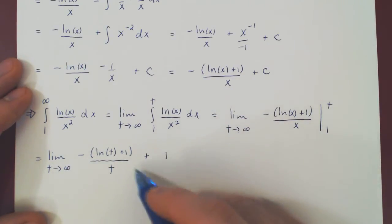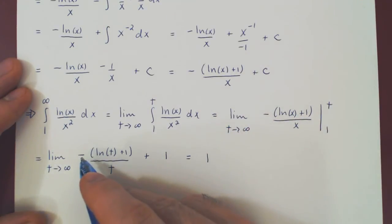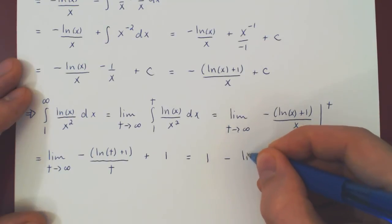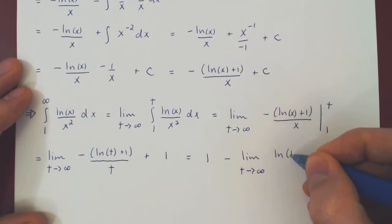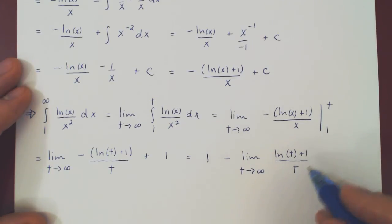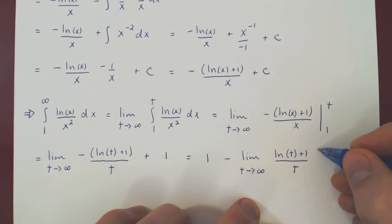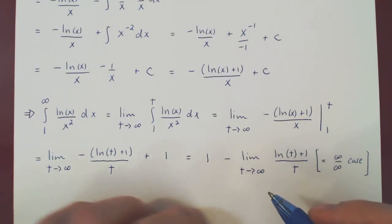Well, 1 is a constant, so all we have now is 1, and we can factor this negative, minus the limit as t goes to positive infinity of ln of t plus 1 over t. Well, this is a non-trivial limit, as both the numerator and denominator are approaching infinity as t approaches infinity, but that's actually good news. Since we have an infinity over infinity case, we can find this limit using L'Hôpital's rule.